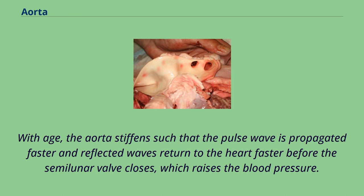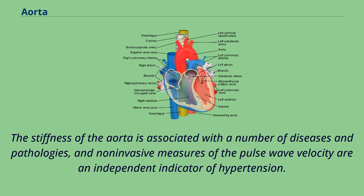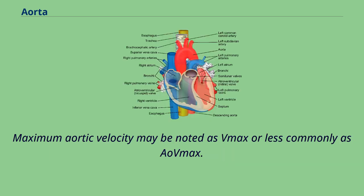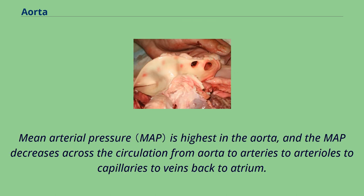The stiffness of the aorta is associated with a number of diseases and pathologies, and non-invasive measures of the pulse wave velocity are an independent indicator of hypertension. Measuring the pulse wave velocity is a means of determining arterial stiffness. Maximum aortic velocity may be noted as Vmax or less commonly as AUVmax. Mean arterial pressure is highest in the aorta, and the MAP decreases across the circulation from aorta to arteries to arterioles to capillaries to veins back to atrium.